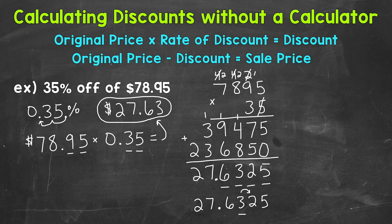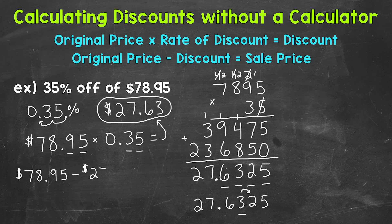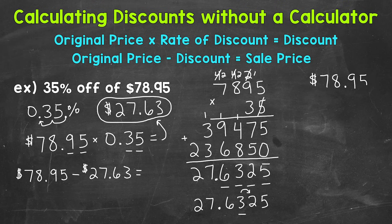So $27.63 is our discount — that's how much money we are taking off the original price; that's 35% of $78.95. Now we subtract that discount from the original price. The original price, $78.95, minus the discount, $27.63. When we subtract decimals, we need to line the decimals up. So let's calculate this: $78.95 minus $27.63, with the decimals lined up.